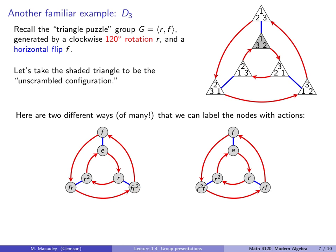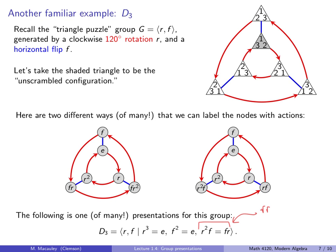The following is one of many presentations for this group. D3 is generated by R and by F, and R cubed is the identity, F squared is the identity, and R squared F equals FR. So in other words, this equals that. And I say it's one of many presentations, because instead of this last thing here, I could have said instead of this being equal to that, I could have said that equals that. I could have replaced this thing with FR equals R squared F. And as I said, there are many ways you can label the nodes. If you really wanted to, you could call this node FR squared F, but you know, why would you want to do that?